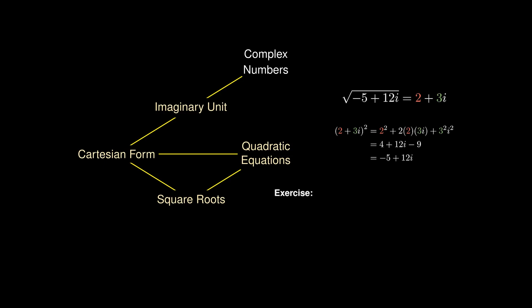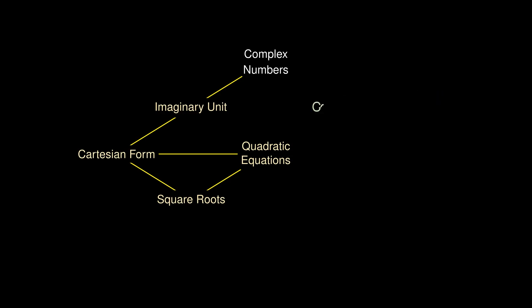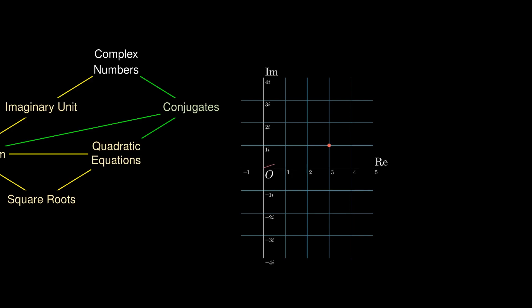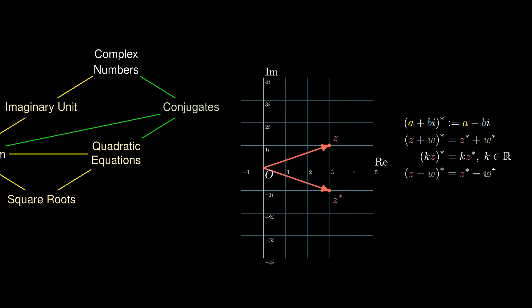We do have a general formula for the square root of a complex number. An important notion in complex numbers is conjugates: taking a complex number z and reflecting it about the real axis, denoted z*. The formal definition is that the conjugate of a + bi is a - bi. This gives many conjugate properties compatible with addition, subtraction, multiplication, and division.